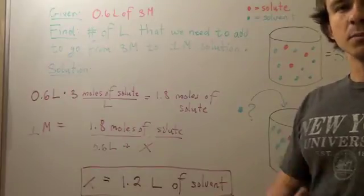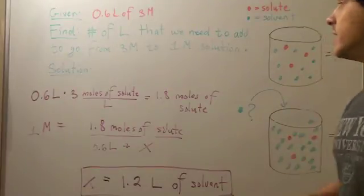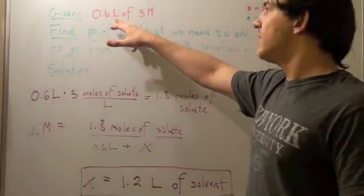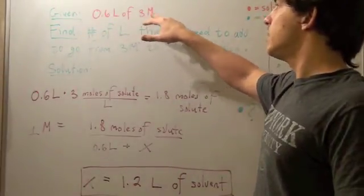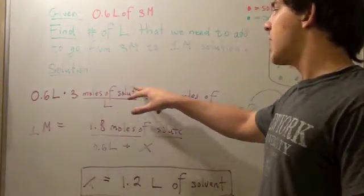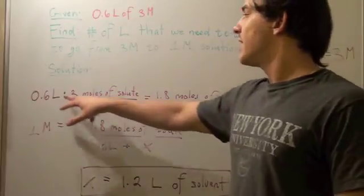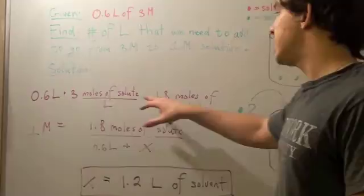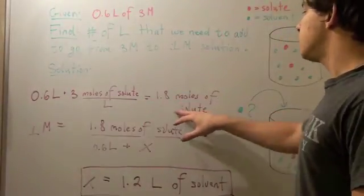The constant here is the number of moles of solute. To find the number of moles of solute, we take 0.6 liters and multiply it by 3 molar. 0.6 liters times 3 moles of solute over liters, the L's cross out, 0.6 times 3, we get 1.8 moles of solute.